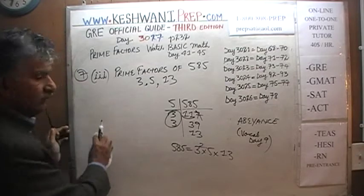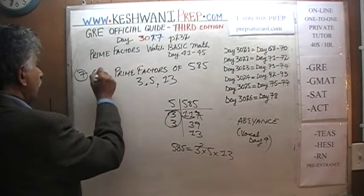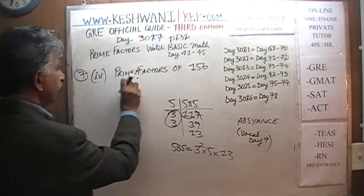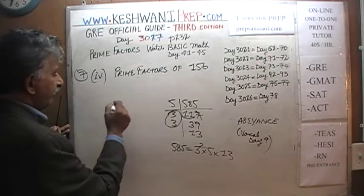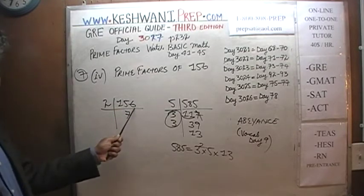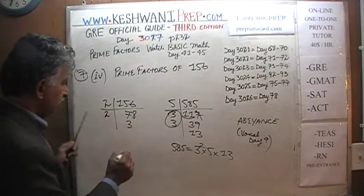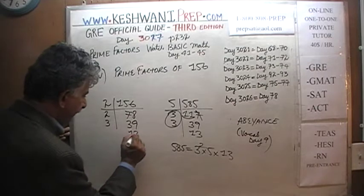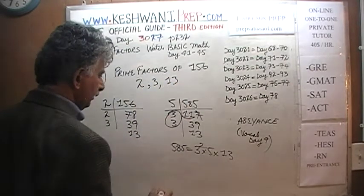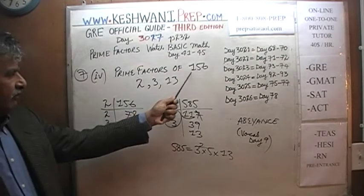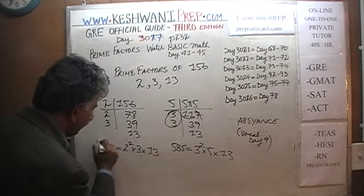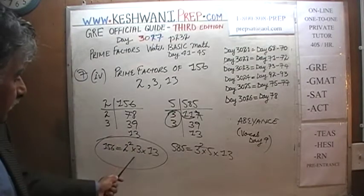Let's do part 4: 156. Dividing by 2 repeatedly: 156 ÷ 2 = 78, ÷ 2 = 39. Now 39 ÷ 3 = 13. So 156 is 2 squared times 3 times 13, and therefore the prime factors of 156 are 2, 3, and 13.